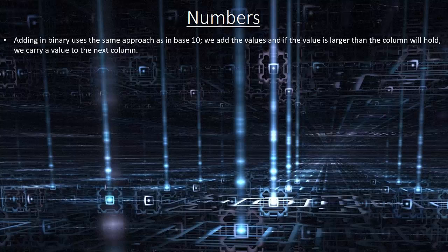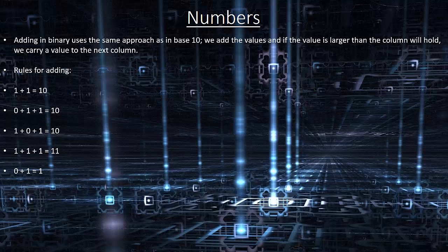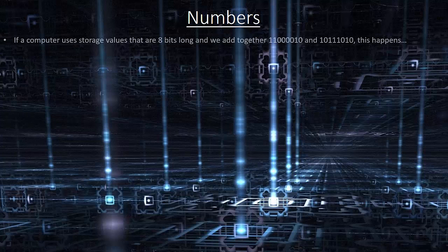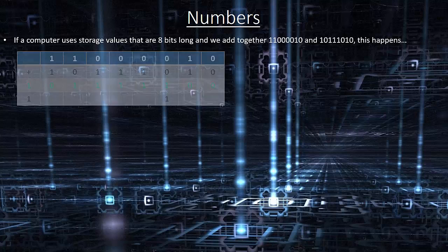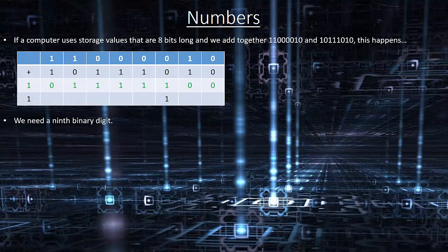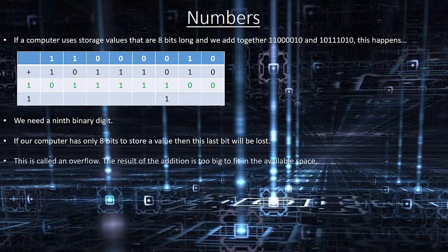Adding in binary uses the same approach as in base 10. We add the values and if the value is larger than the column will hold, we carry a value to the next column. Rules for adding: 1 plus 1 equals 10; 0 plus 1 plus 1 equals 10; 1 plus 0 plus 1 equals 10; 1 plus 1 plus 1 equals 11; and 0 plus 1 equals 1. If a computer uses 8-bit storage values and adding overflows beyond 8 bits, the extra bit is lost. This is called an overflow — the result of the addition is too big to fit in the available space.